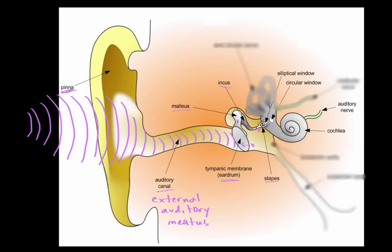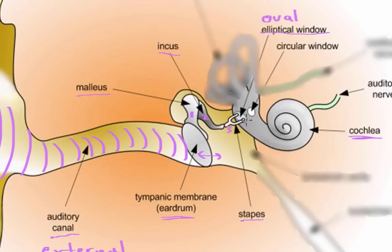The stapes is attached to the oval window, also known as the elliptical window, which starts to vibrate back and forth as well. Inside the cochlea — the round structure to which the oval window is attached — is fluid. As the oval window is pushed in and out by the stapes, it pushes the fluid, causing it to travel all the way around the cochlea.